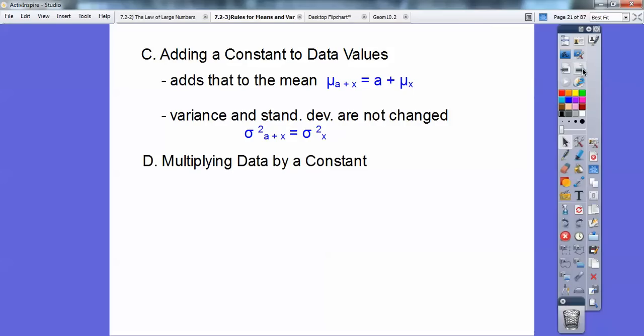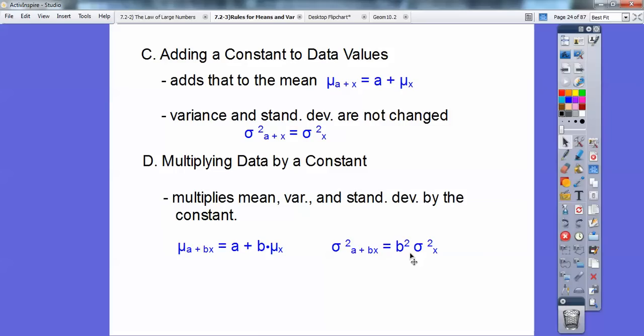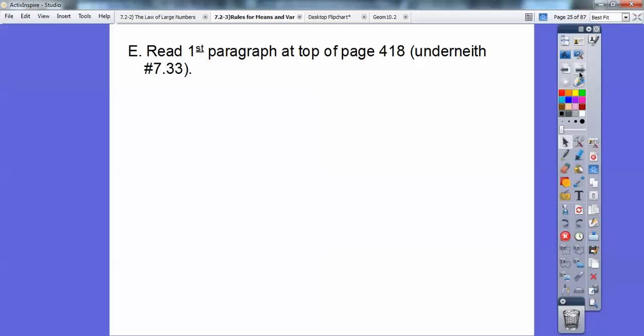Multiplying data by a constant, what that does is it multiplies everything, the mean, the variance, and the standard deviation by the constant. So, here we go. Here's the formulas. I'm going to still put that plus A in there, so when I add A to it and then multiply B to it, then it adds A and multiplies B to the mean. When I do that with the variance, all it does is multiplies B, and since variance is squared, then so is the B squared. Remember, the standard deviation is the square root of that. Notice the A is not in here because it doesn't add, it doesn't change it that way, but when you multiply, it does.